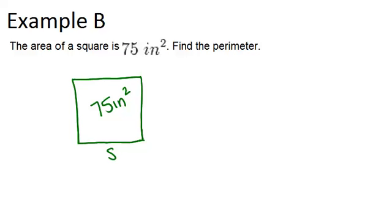So let's just say that each length of the square was S. So what we know is that base times height, which in this case would be S times S, is 75.